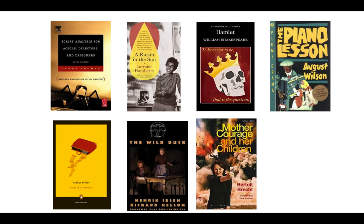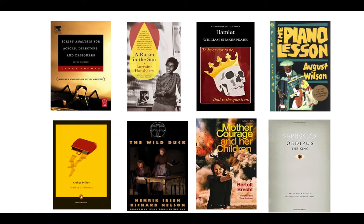Bertolt Brecht's Mother Courage and Her Children — I did find a version online. I personally like the Tony Kushner translation if you're going to purchase it; his translation is more readable. Tony Kushner wrote Angels in America and is a very celebrated playwright. Lastly, we have Oedipus the King, another open resource — not to be confused with Oedipus Rex or Oedipus at Colonus, which is later in his life. This is the first in Sophocles' Theban trilogy, so make sure you read the right one.